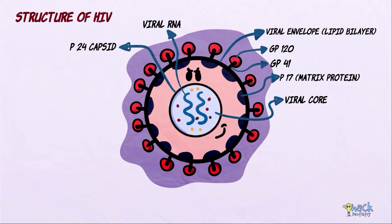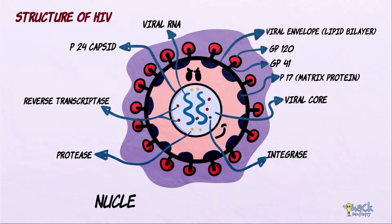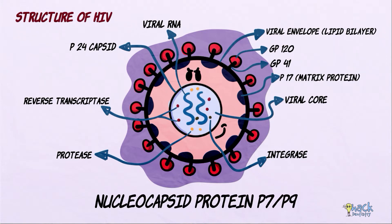The viral core consists of a P24 capsid, two copies of viral RNA, and three enzymes: reverse transcriptase, integrase, and protease. It also consists of a nucleocapsid protein called P7 or P9.